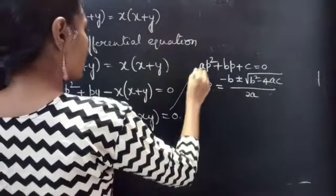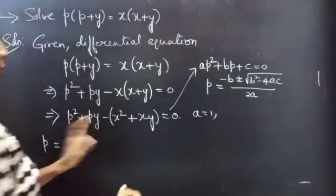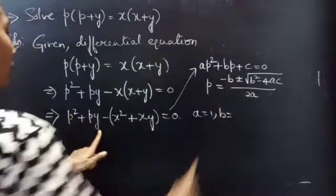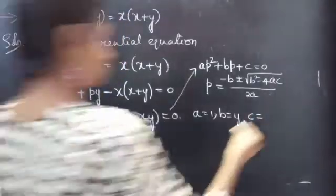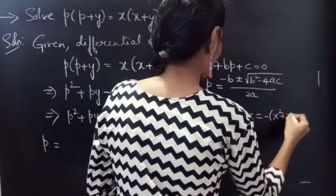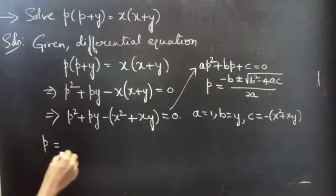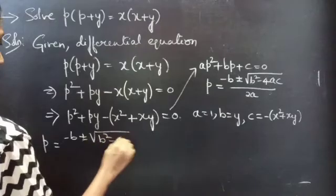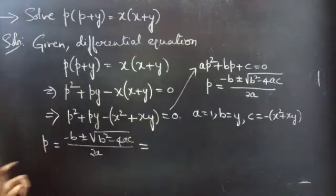By comparing these two equations we get A = 1, B = Y, and C = −(X² + XY). Now consider P = (−B ± √(B² − 4AC)) / 2A and substitute A, B, C values.